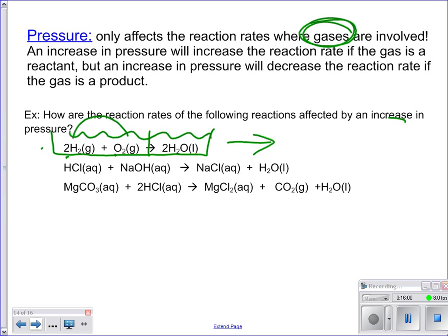Next one, an increase in pressure, how would that affect our second one? No effect. Because there are no gases. So it wouldn't change it at all. And finally, our third one, an increase in pressure would cause it to shift left. Because here is your gas, your only gas. So it's going to cause it to go the other way. Okay, so that's what we see for pressure. Again, it only affects gases. Make sure you circle that.